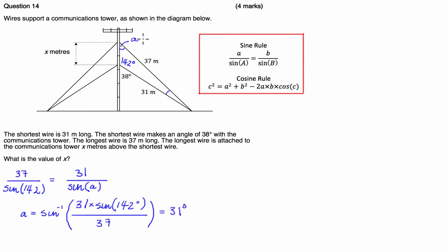So we now know that A is equal to 31 degrees. Now if we add these two angles together and subtract from 180, we're able to get this angle here. So this angle here will equal 7 degrees.